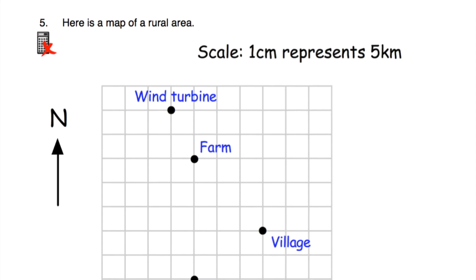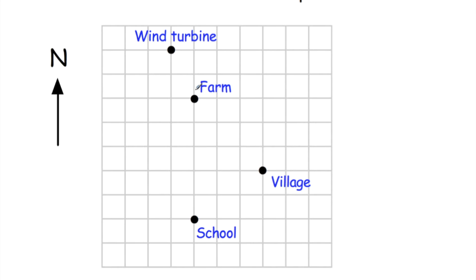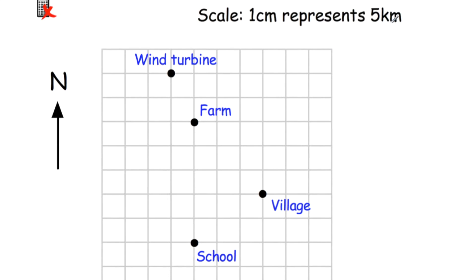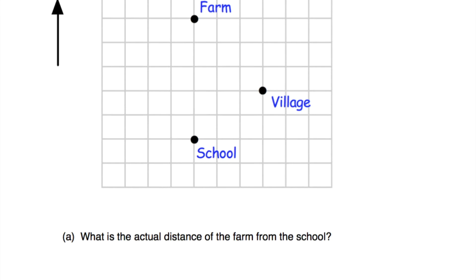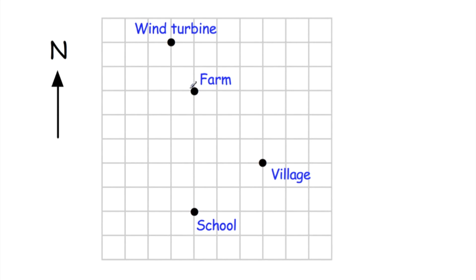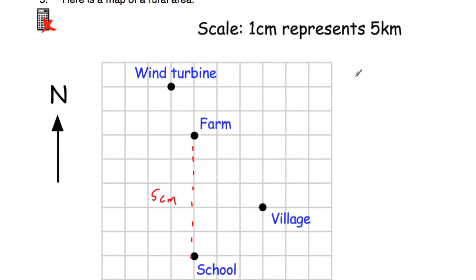Question number five: here's a map of a rural area with a wind turbine, a farm, a village, and a school. One centimeter represents five kilometers, so each centimeter on this grid is one centimeter, representing five kilometers. Part A says what is the actual distance of the farm from the school? Get your ruler and measure that distance — it should be five centimeters on the diagram. Since one centimeter represents five kilometers, five centimeters would be five times five, which is 25. So the actual distance between the farm and the school is 25 kilometers.